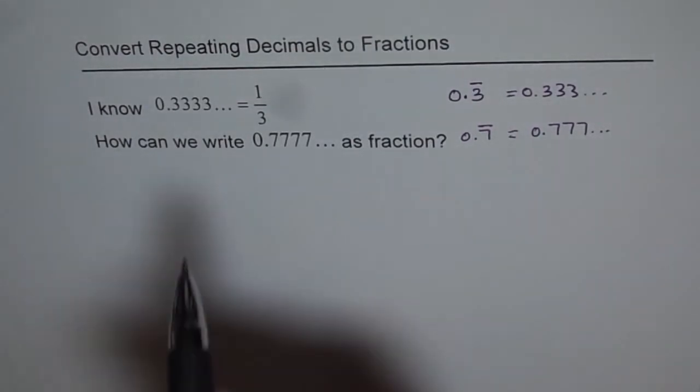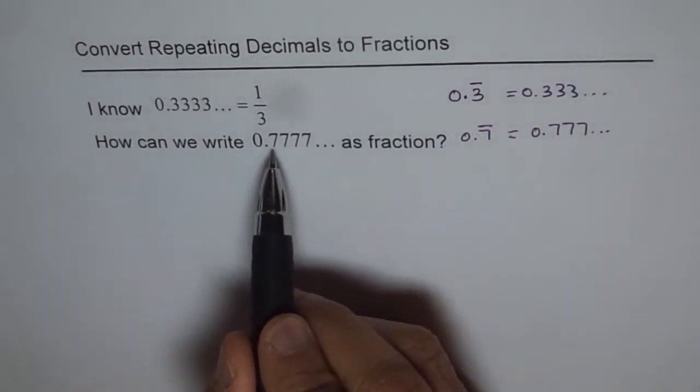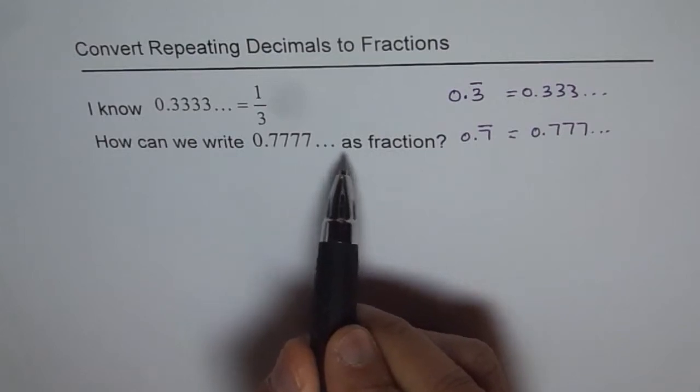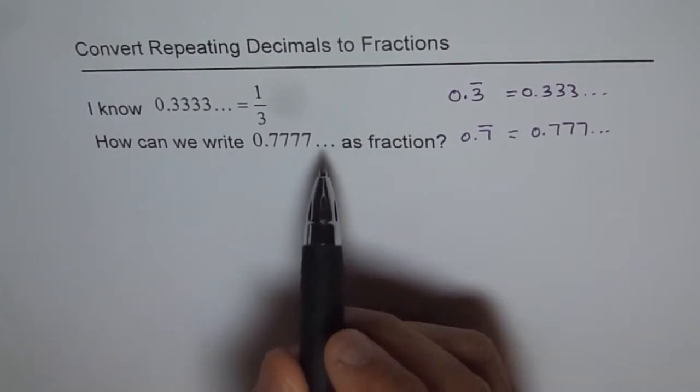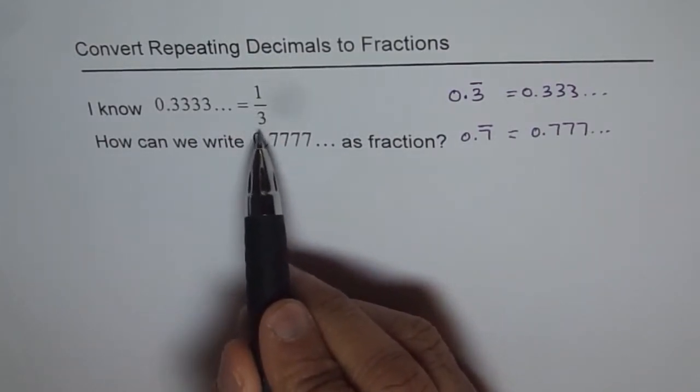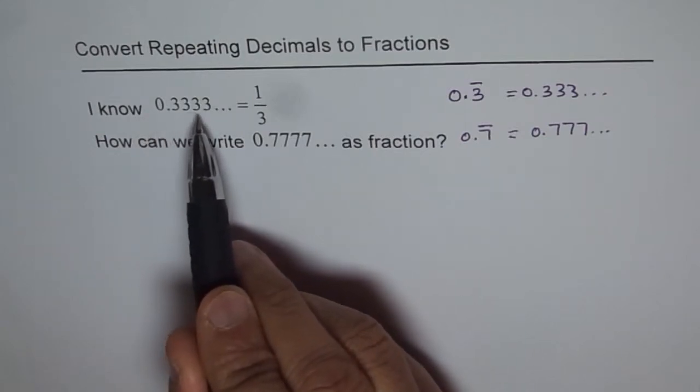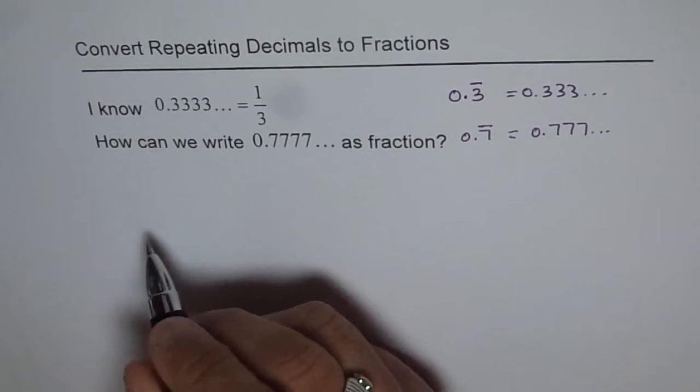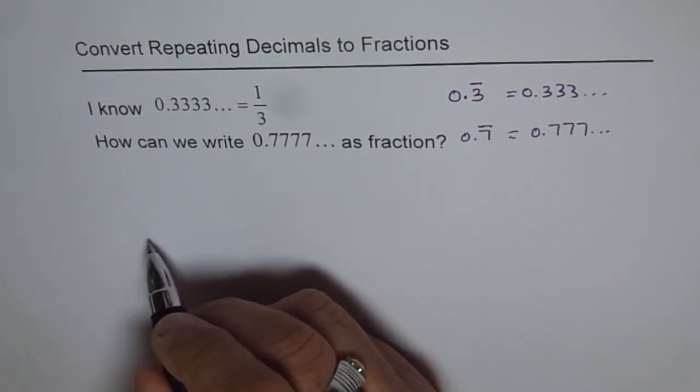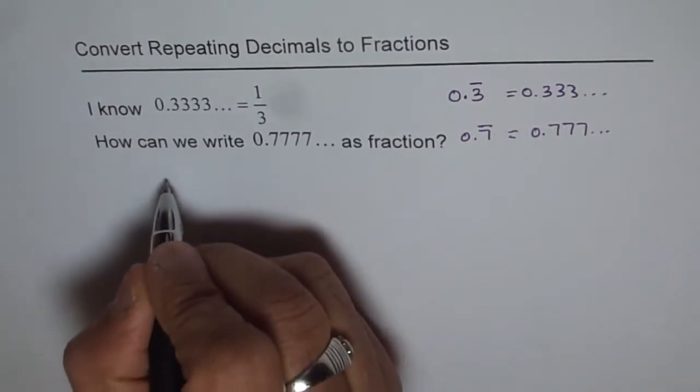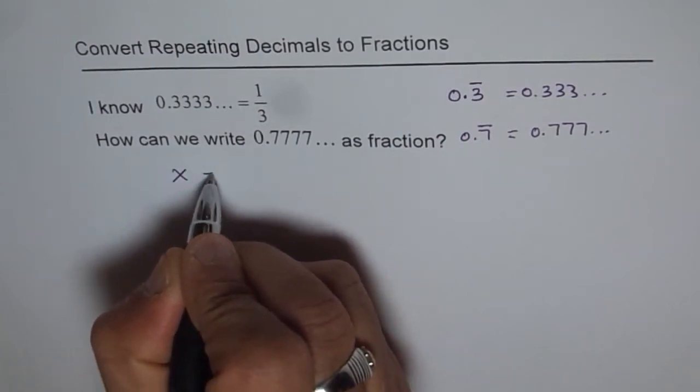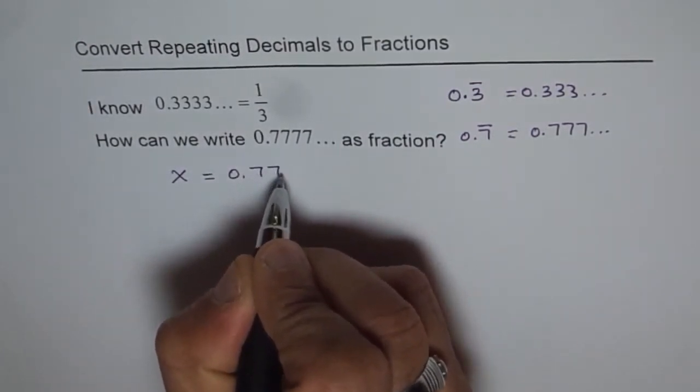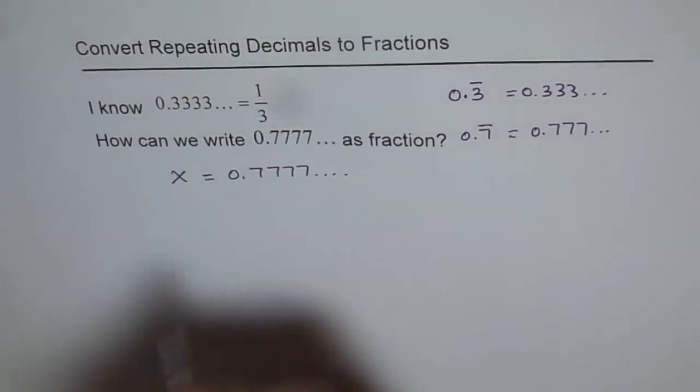So we want to know how to write 0.7777 and so on as a fraction. Just as you know, 1 over 3 equals 0.33333. What over what is 0.777? We don't know what it is. So let it be x. Let's say x equals 0.77777 and so on.